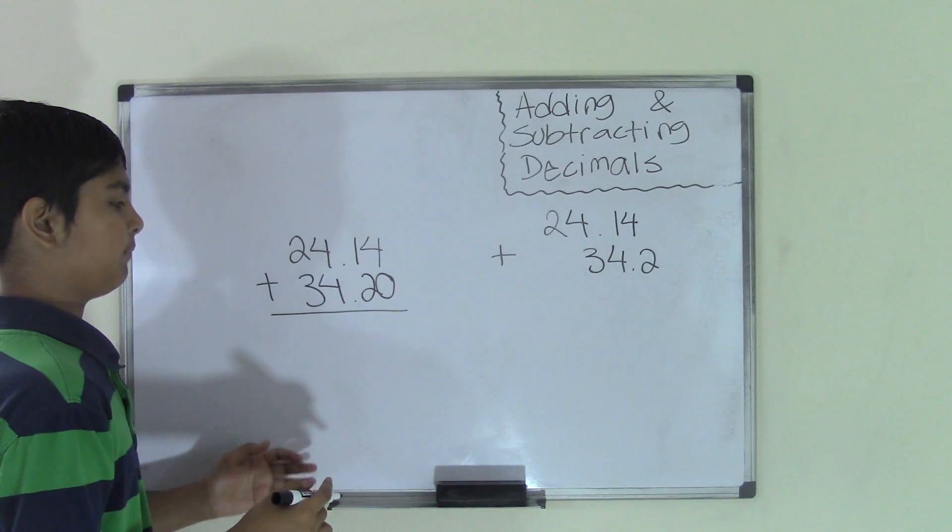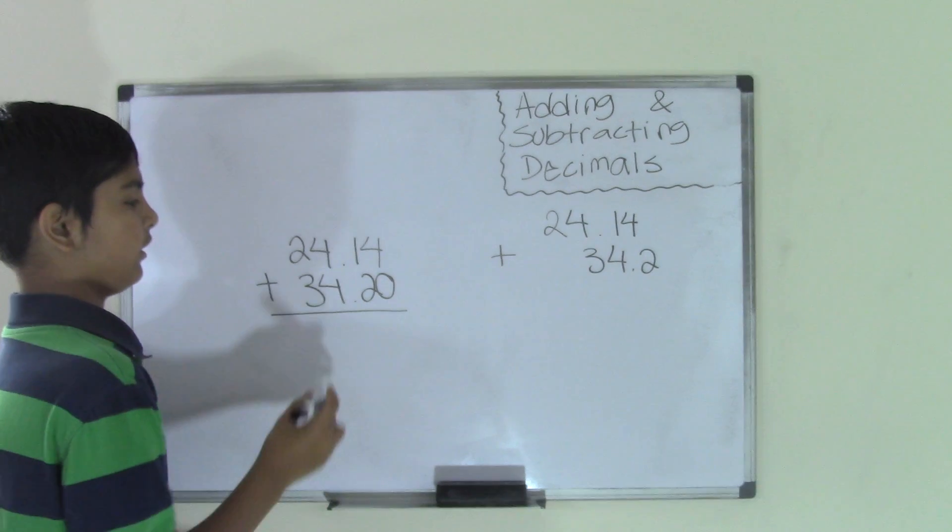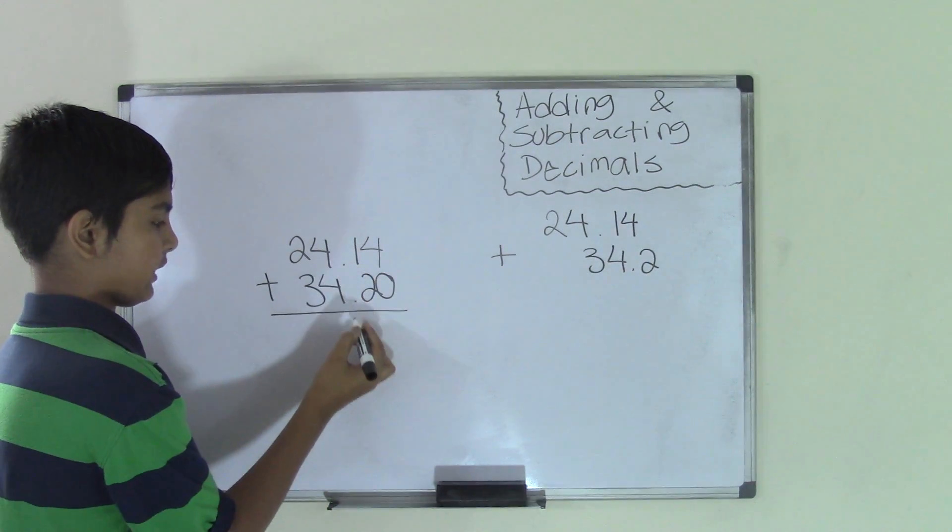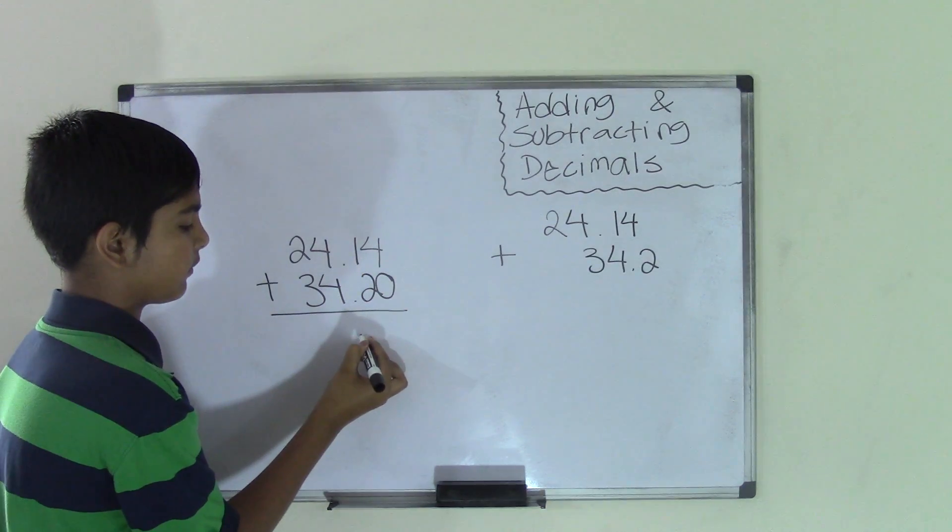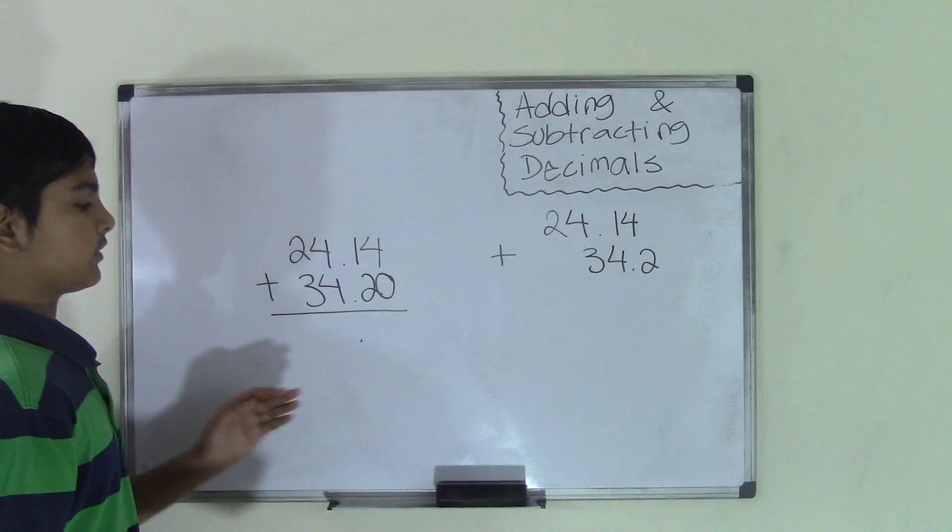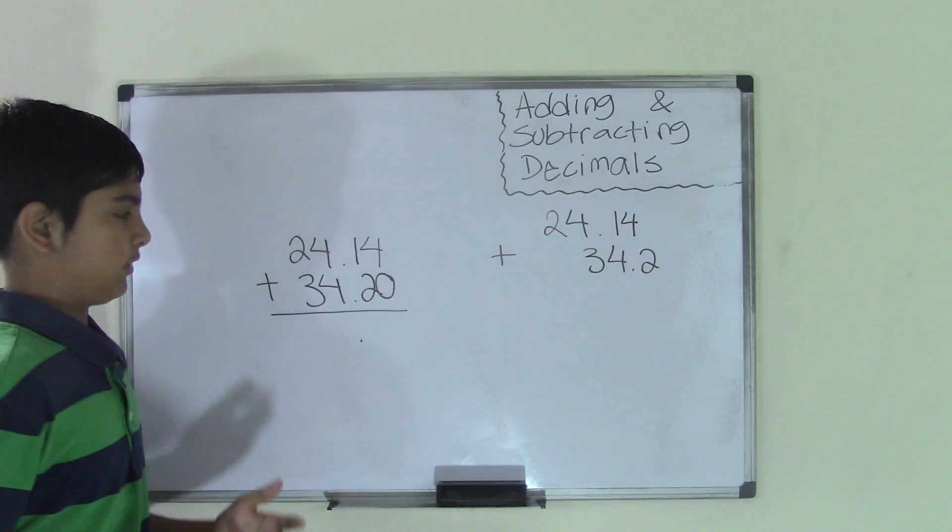Now we have to add. Before we add, we need to bring down the decimal points from the numbers down to our sum. So if the decimal points are over here, I'll bring it down right over here. So now I have the decimal points brought down and now you simply add.